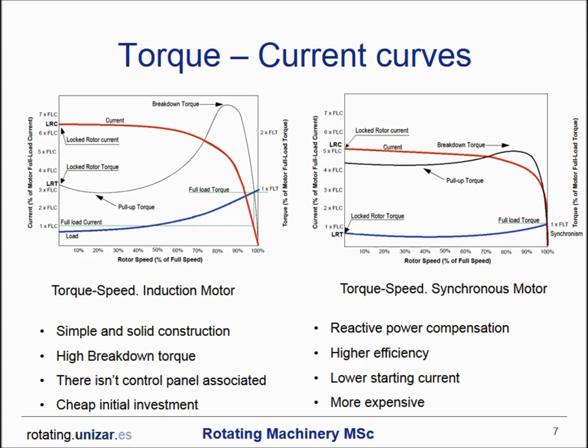On the other hand, synchronous motors, though more costly than induction motors, are preferred in many cases — especially as motor rating increases. The main reasons for selecting a synchronous motor are: reactive power compensation to adjust the plant's total power factor and avoid utility penalties associated with low power factor; higher efficiency, since exciting the rotor with DC current avoids much of the associated losses; and high starting torque with low starting current, resulting in less impact on the electrical grid.